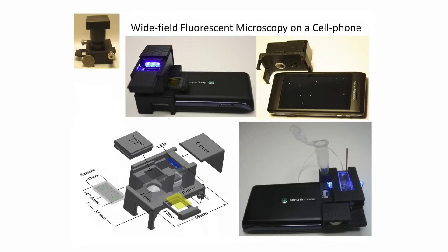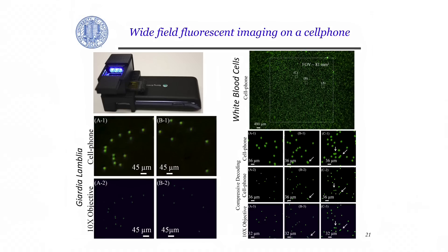Recently, we've also introduced fluorescent microscopes on the cell phone. Everything I've shown you so far was bright-field transmission microscopy, but there are ways of converting a cell phone in a cost-effective and lightweight manner into a fluorescent microscope or a fluorescent flow cytometer. Using a very cost-effective attachment, you can look at very large areas — this is whole blood — and zooming in you'd see white blood cells, as well as giardia, waterborne parasites, imaged with this fluorescent microscope.